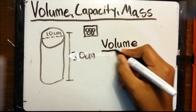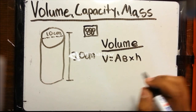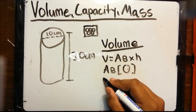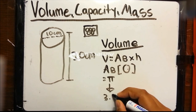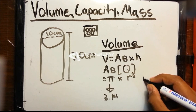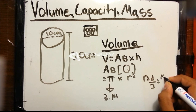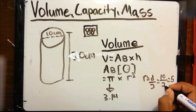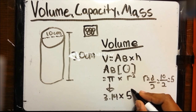Volume. The formula for figuring out the volume of any prism is area of base times height. The base of a cylinder is a circle. The formula to figure out the area of a circle is pi, which is 3.14, multiplied by r squared. r stands for radius, which is the diameter divided by 2 — in this case, 10 divided by 2, which equals 5 centimeters — which will be squared.